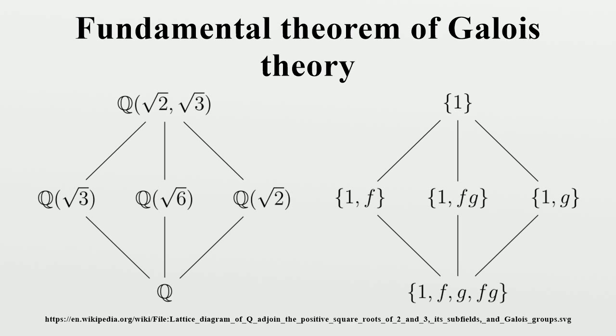Example 1: Consider the field K = Q(√2, √3). Since K is first determined by adjoining √2, then √3, each element of K can be written as a + b√2 + c√3 + d√6, where a, b, c, and d are rational numbers.